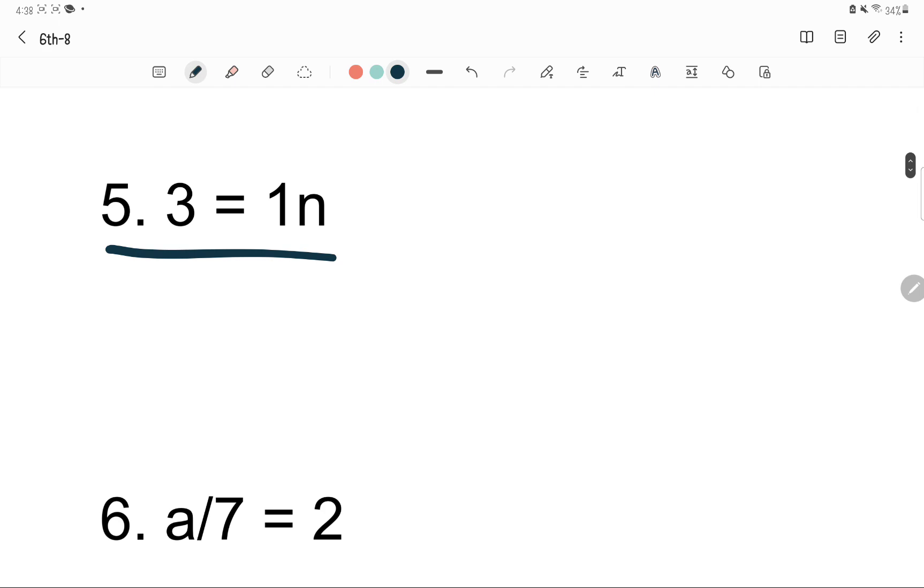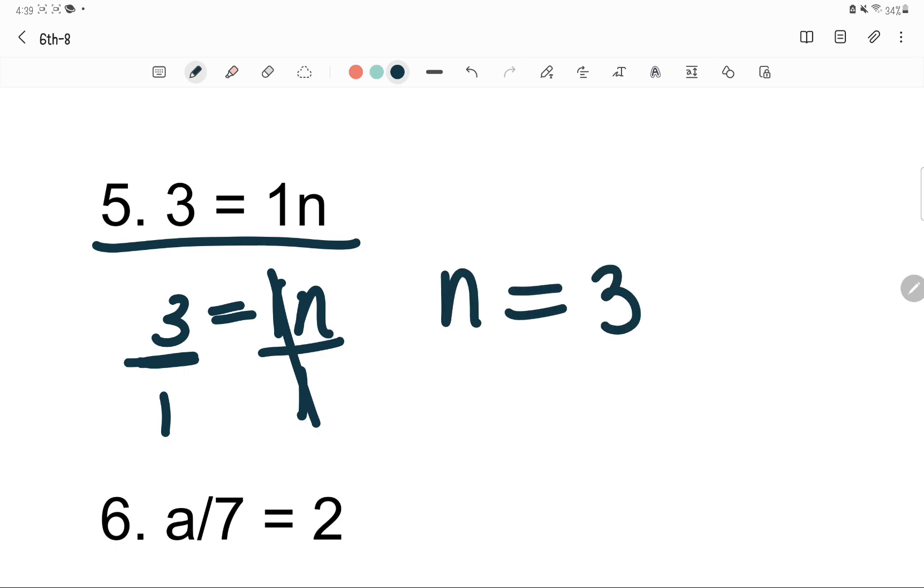Most of them are pretty much the same concept, and I'll go over number 5. Seems simple, but it can be confused. 3 equals 1n. It means that 1 times n equals 3. Divide the same, divided by 1. 1 divided by 1 is just 1, and 3 divided by 1 is just 3. So n is 3.